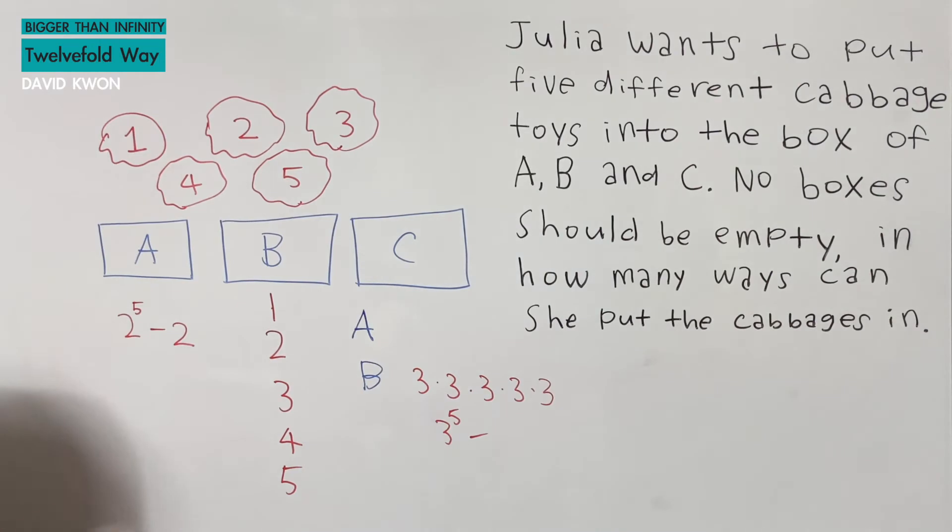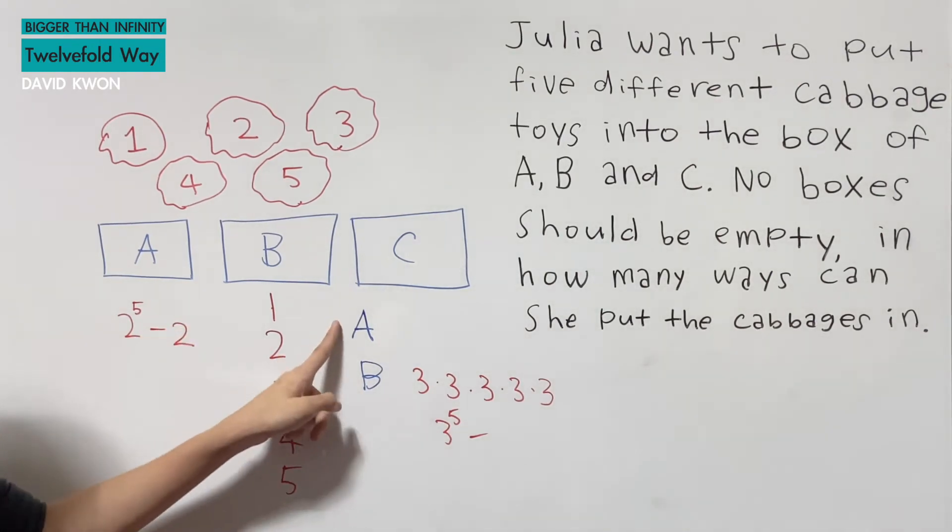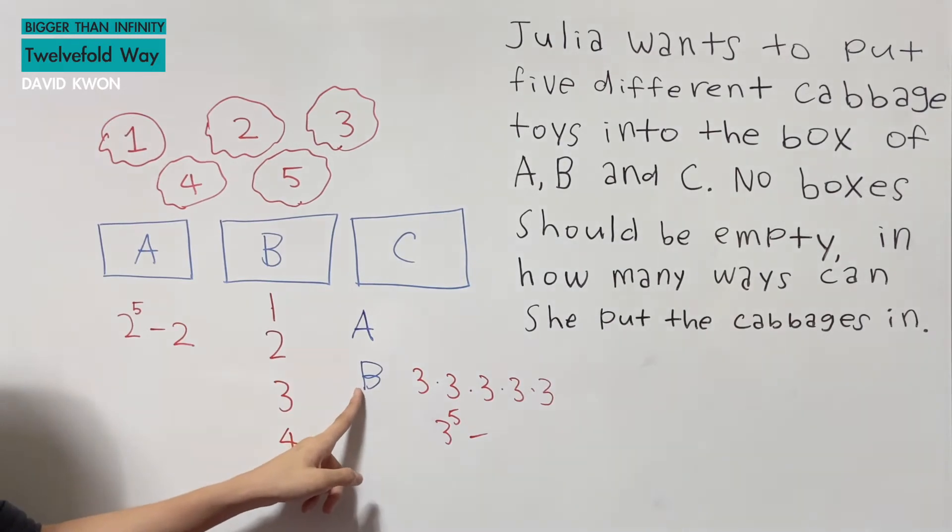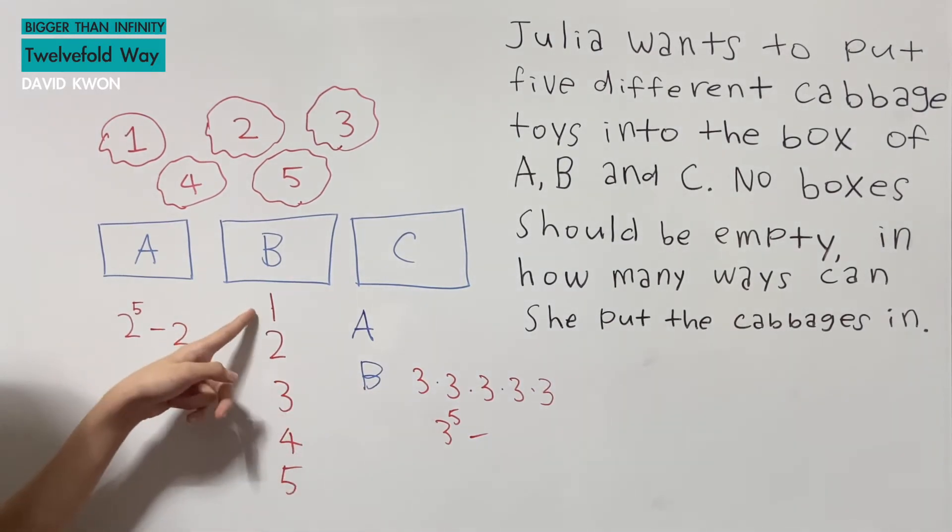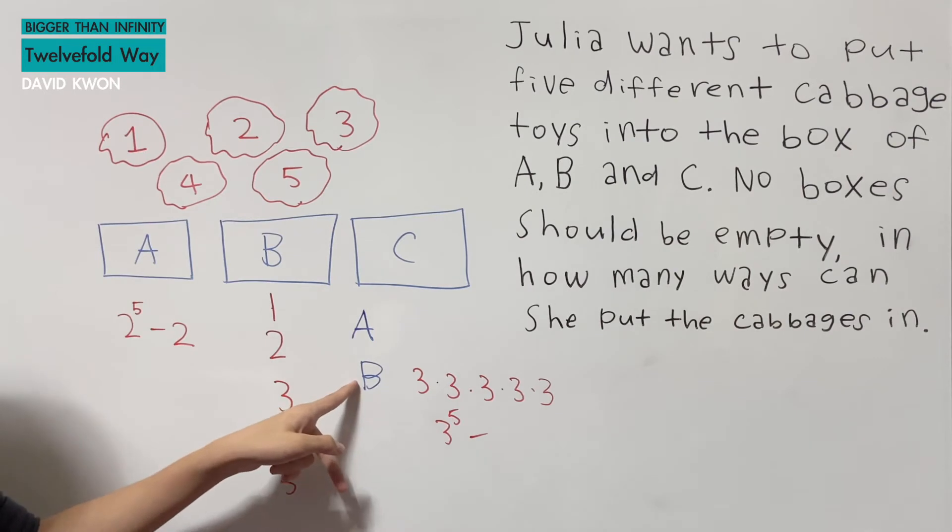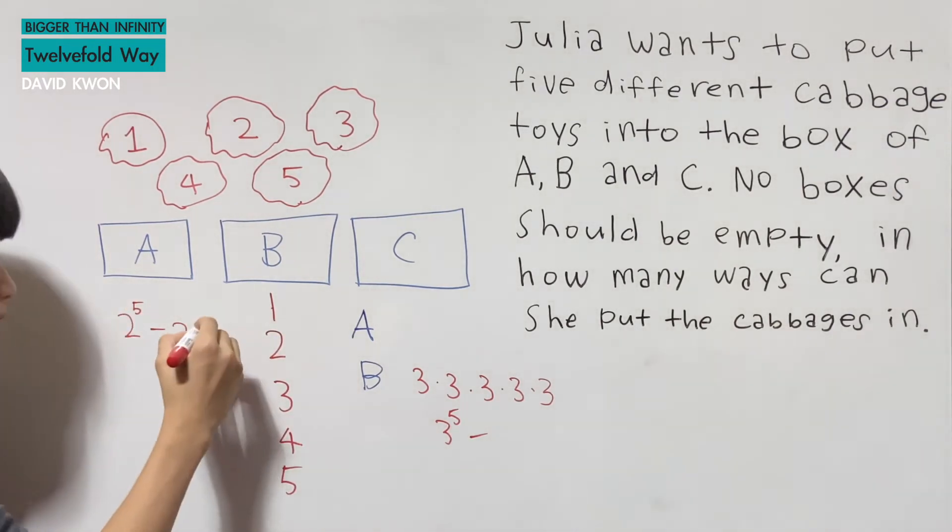Because if every number goes to letter A, then we have B that's alone, and we don't want that. And now if we have all of the numbers that goes to B, we have A that is alone, and we don't want that. And this is 30.